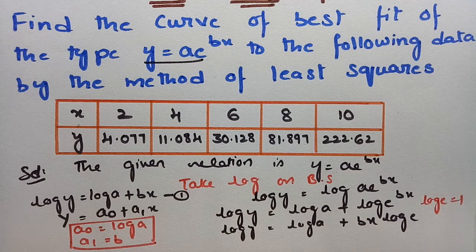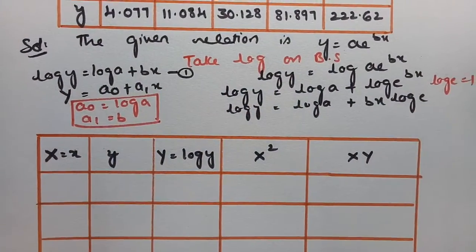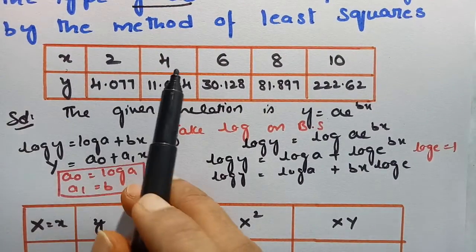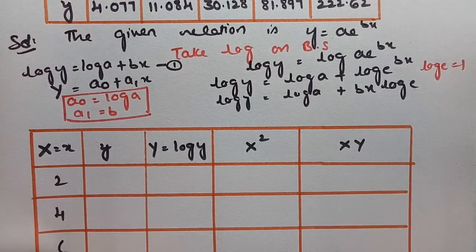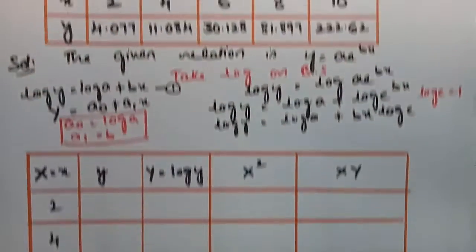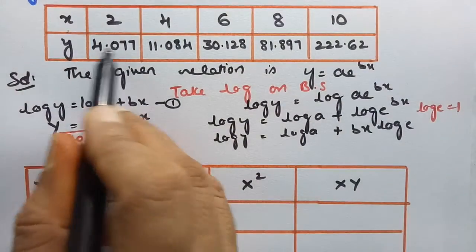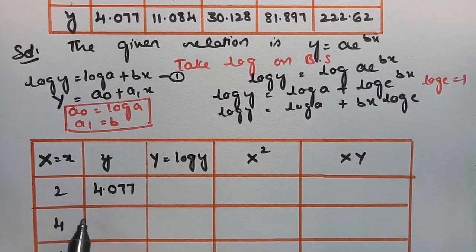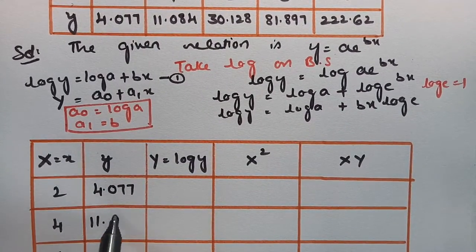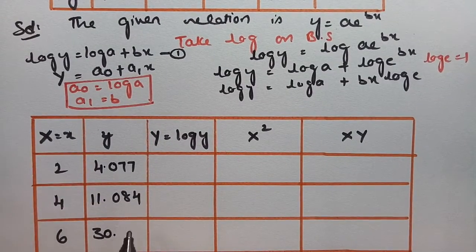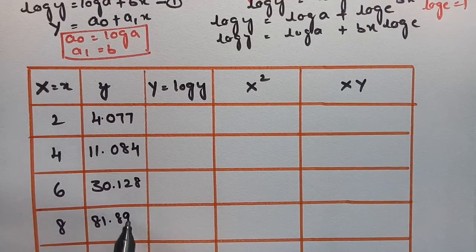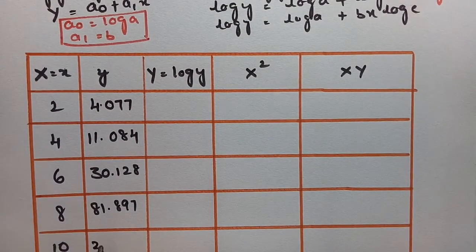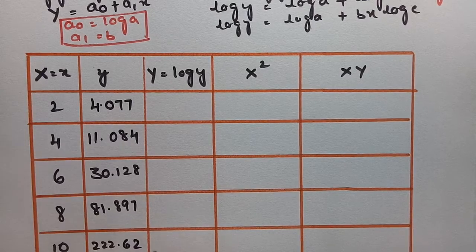Now we need to build a table. Our x values are: 2, 4, 6, 8, and 10. The corresponding y values are: 4.077, 11.084, 30.128, 81.897, and 222.62.